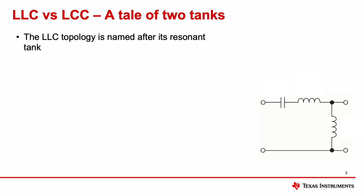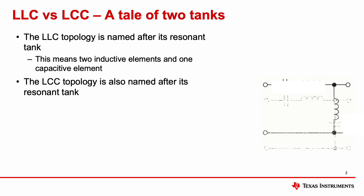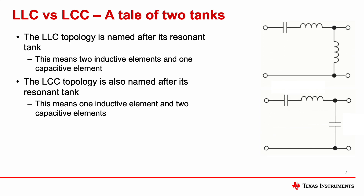The LLC topology is named after its resonant tank. This means there are two inductive elements and one capacitive element, hence the term LLC. The LCC topology is also named after its resonant tank. This means that there is one inductive element and two capacitive elements, hence the term LCC.